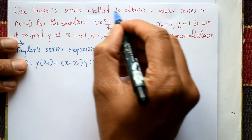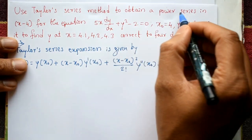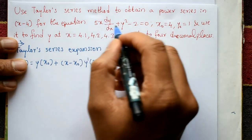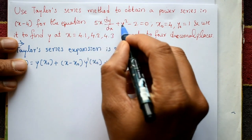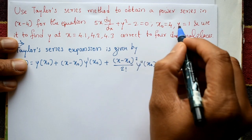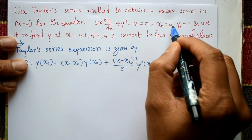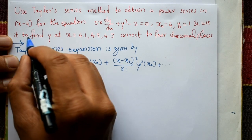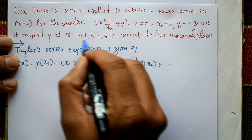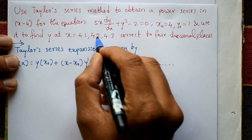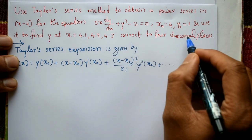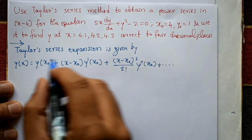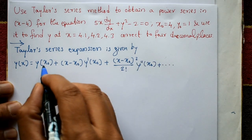Use the Taylor series method to obtain a power series in (x - 4) for the equation: 5x dy/dx + y² - 2 = 0, with initial condition x₀ = 4, y₀ = 1. Use it to find y at x = 4.1, 4.2, 4.3, correct to four decimal places.